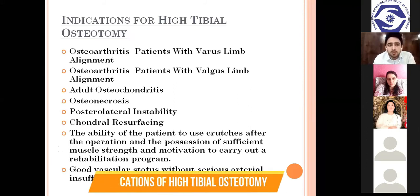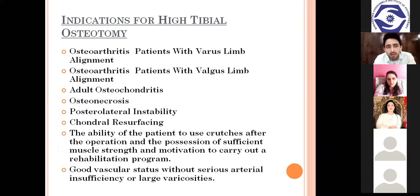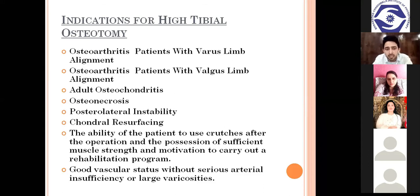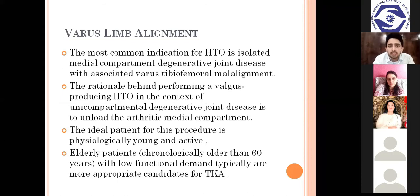Superior results are more likely with contemporary fixation and post-operative management techniques after HTO. Evolving chondral resurfacing techniques are contraindicated in the presence of tibiofemoral malalignment. Combining high tibial osteotomy with chondral resurfacing procedures may provide better results than HTO alone. Indications for HTO include osteoarthritis with varus or valgus limb alignment, adult osteochondritis involving cartilage inflammation, osteonecrosis with less blood supply to bone tissue, and posterolateral instability.